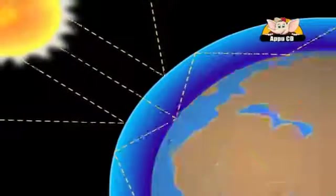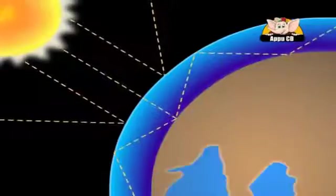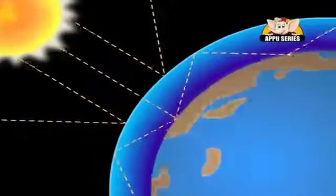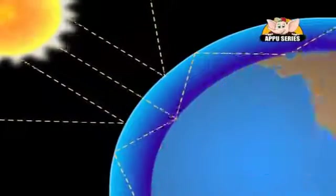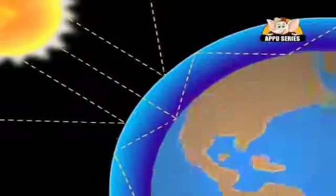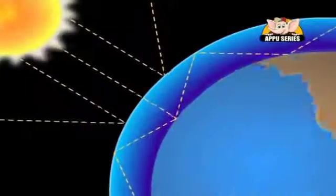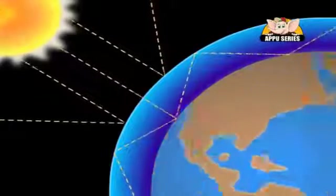Without the atmosphere, we would not be able to live here. Those gases protect us by blocking out dangerous rays from the sun and making Earth a perfect habitat for plants and animals.